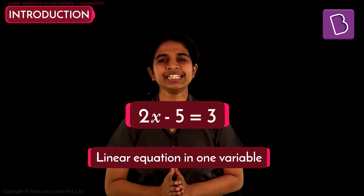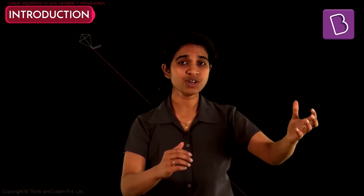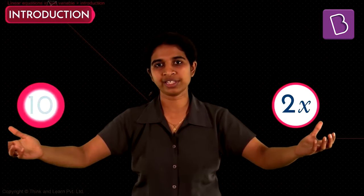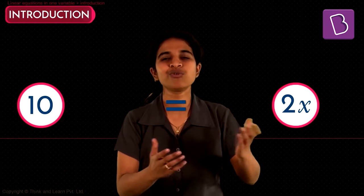Three conditions: highest power of the variable is 1, only one variable, and an equal-to sign must be present. That's a linear equation in one variable. What do they help us do? An equation compares two things. If you have an unknown, put it on one side, the known on the other, put an equal-to sign in between, and solve it to find the value of the unknown. They help us find unknown quantities in any given situation.